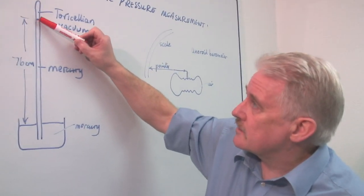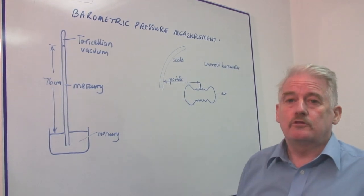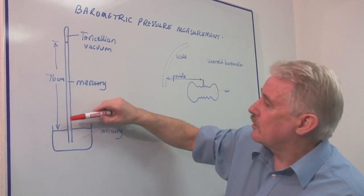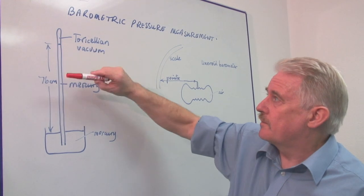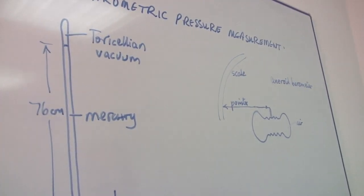The mercury will not actually go to the top of the tube. The mercury actually will only go 76 centimeters up the tube and then you will get a pure vacuum called a Torricellian vacuum.